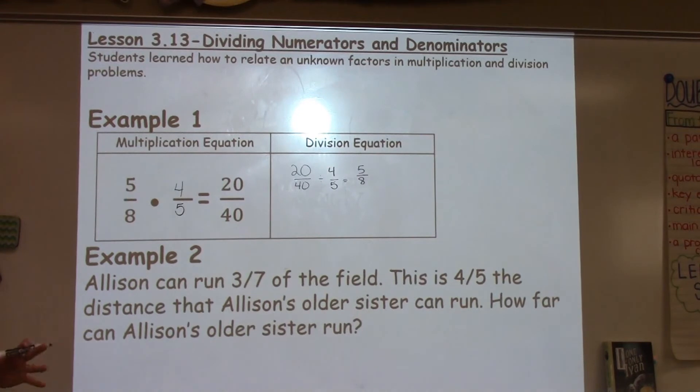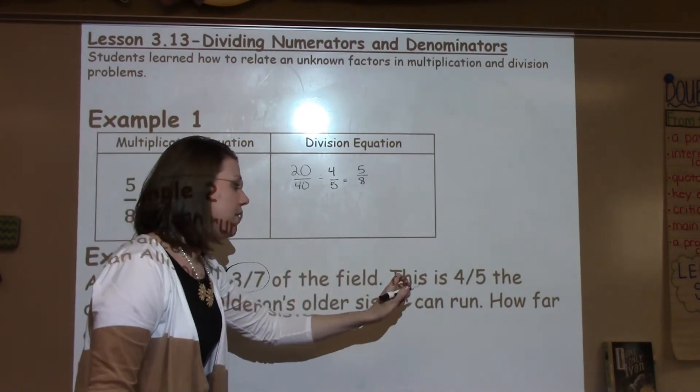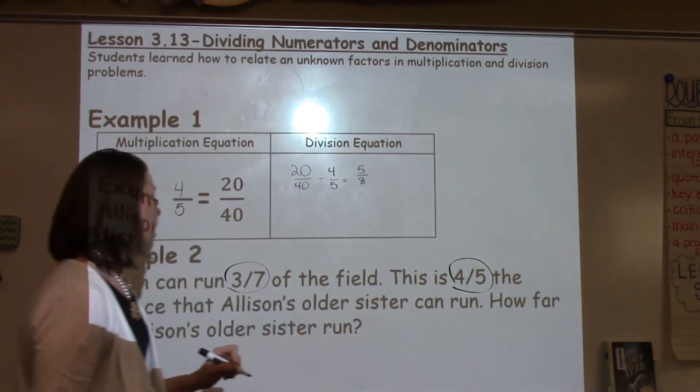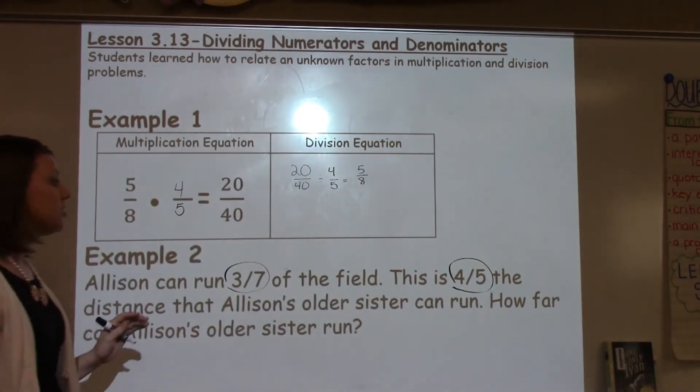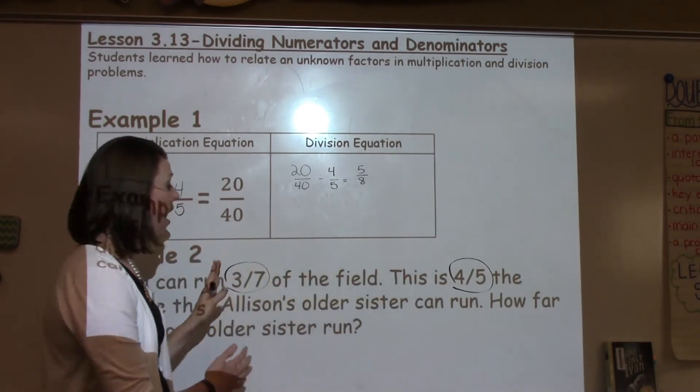When you look at this problem, we need to think about what important information do we need to know. We know Allison can run 3/7 of the field, and this is 4/5 that her older sister can run. So, we know she is going to run even less than Allison can run, because she's going to do 4/5 of Allison's amount.